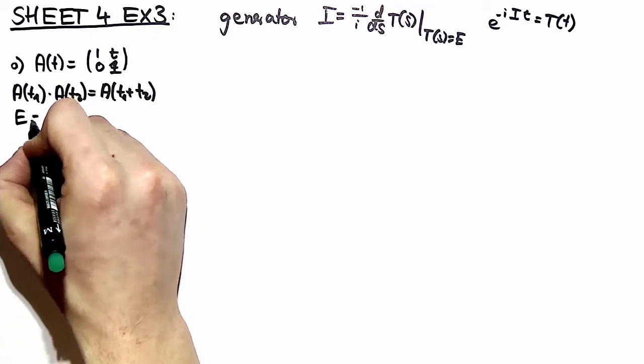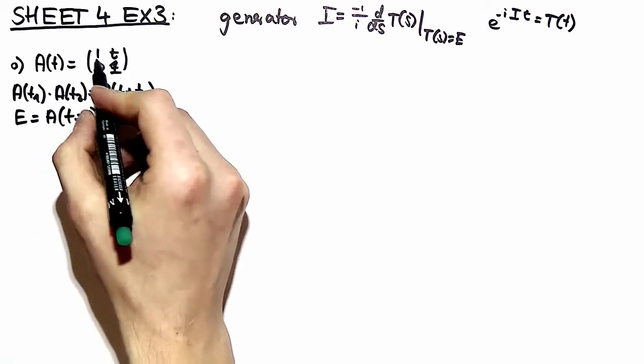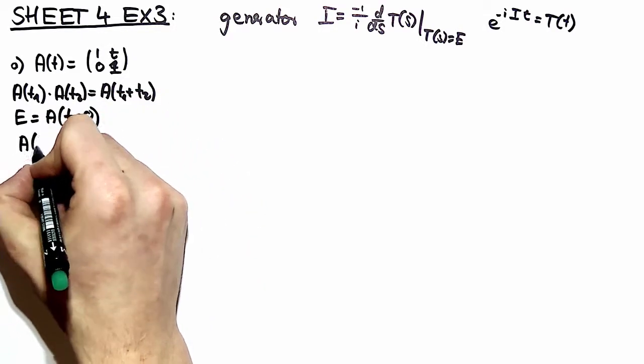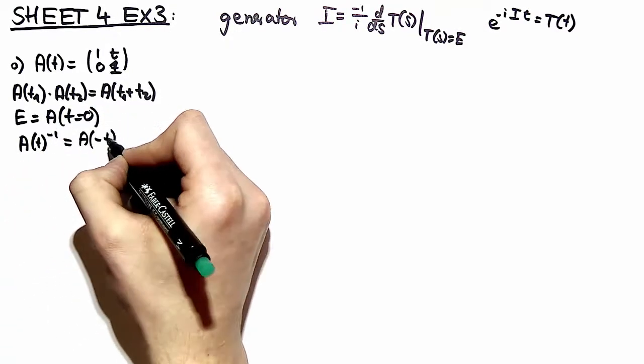The identity element is defined as taking t equal to 0 because then you have the identity matrix. And if you want to see what the inverse is, well, you just take minus t.